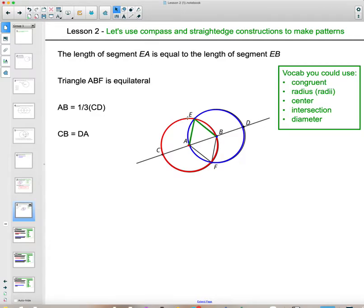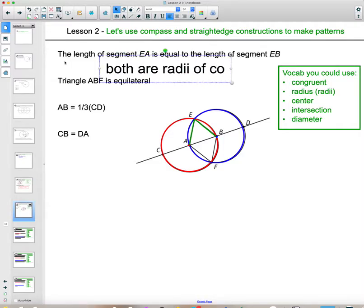Hopefully you determined and said something about that EA and EB are both radii of these circles. We know that these two circles are congruent because they go through each other's center. This red circle is centered around A with radius AB. This blue circle is centered around B with radius AB as well. They're radii in two congruent circles, so they are equal.